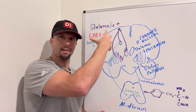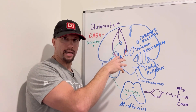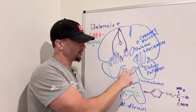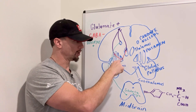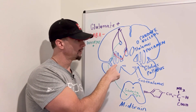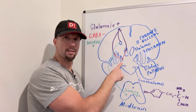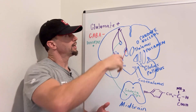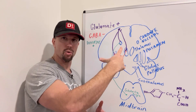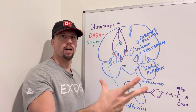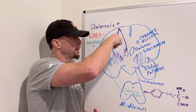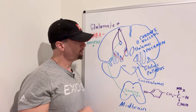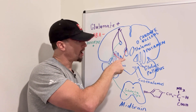The motor cortex sends crude instructions down to the basal nuclei, which include the caudate nucleus, the subthalamic nuclei, and the lentiform nucleus — which individually includes the putamen, globus pallidus externus, and globus pallidus internus. The first initial neuron sends information to the caudate nucleus as well as the putamen, and collectively that's the striatum. We're going to focus on this putamen pathway.